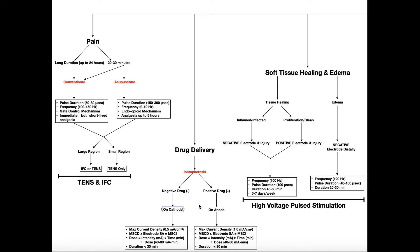Regardless of whether the drug is on the cathode or the anode, the dosage should be anywhere between 40 and 80 milliamp minutes. The way we calculate the dosage is by taking the intensity that we're running the iontophoresis at in milliamps and multiplying it by the time of the treatment in minutes. For example, if our intensity was 3 milliamps and we ran this for 15 minutes, 15 times 3 is 45, so our dosage would be 45 milliamp minutes, which is within this range. Also note that the duration of the iontophoresis treatment should be no more than 30 minutes, so 15 minutes is certainly a reasonable treatment duration.